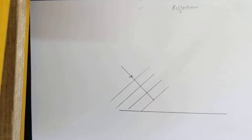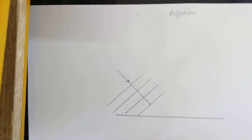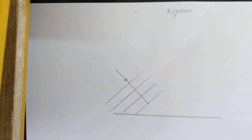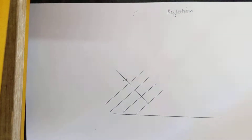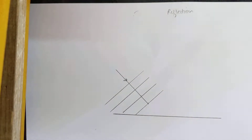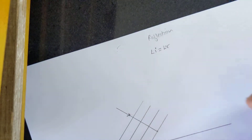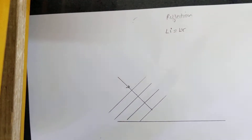Hello, welcome back to the channel — The F in Physics, where the F stands for fun. This video is about reflection wave diagrams. You are going to have reflection diagrams for water waves, light waves, or sound waves. You need to remember that irrespective of the type of wave which is incident, the laws of reflection remain the same, which means your angle of incidence will always be equal to the angle of reflection.